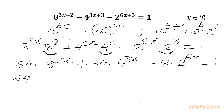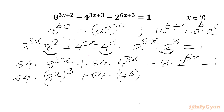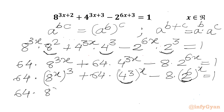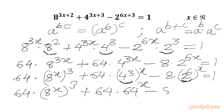Using the exponential law, 8^(3x) can be written as (8^x)³ and 4^(3x) can be written as (4^x)³. Now 4³ is 64 and 2^6 is also 64, so 4^(3x) and 2^(6x) both equal 64^x. Our equation becomes 64 times (8^x)³ plus 64 times 64^x minus 8 times 64^x equal to 1.